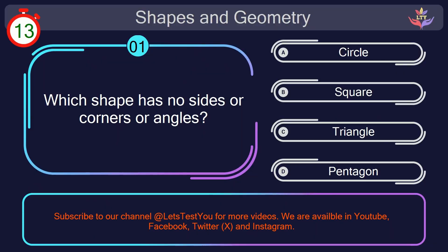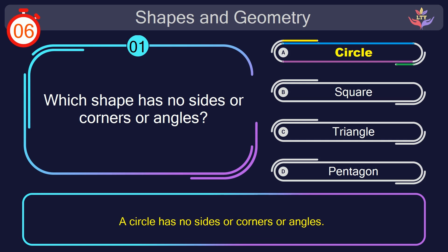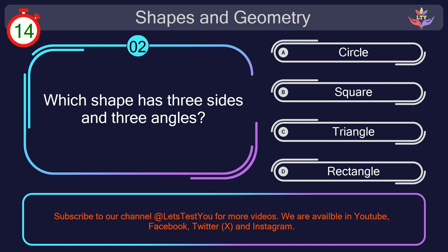Question number 1. Which shape has no sides or corners or angles? Your countdown started. Here we go. The correct answer is option A. Circle. A circle has no sides or corners or angles.